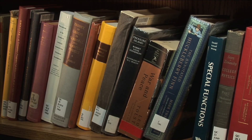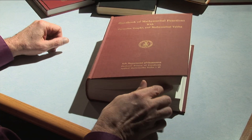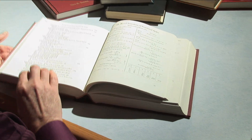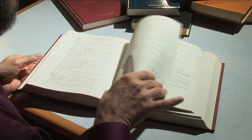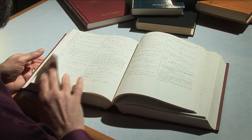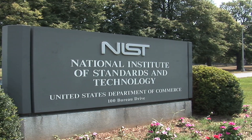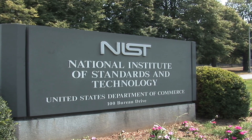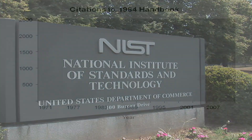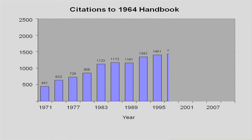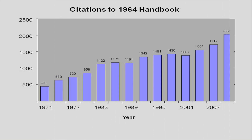Yes, you heard right. The Handbook of Mathematical Functions has been a classic resource for scholars, scientists, and engineers ever since it was first published by the National Institute of Standards and Technology in 1964. In fact, the Handbook is the most widely distributed and most cited NIST technical publication of all time.